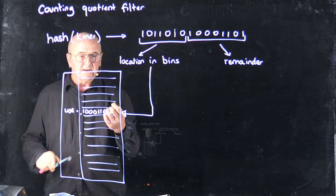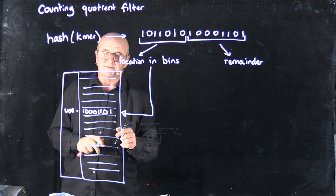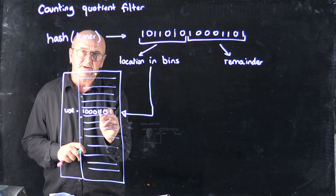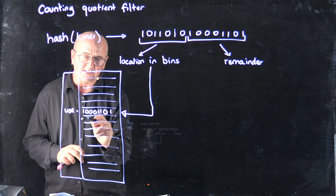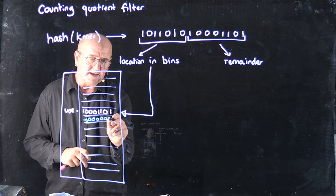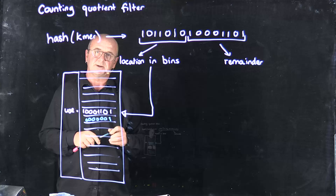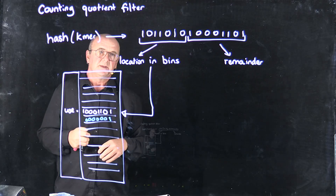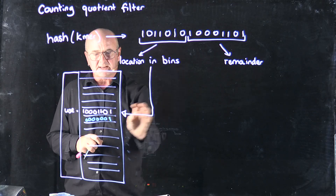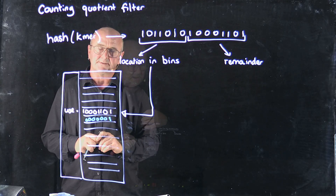The only modification that the counting quotient filter adds is that in the next location after where you're looking, we store basically the count of how many times we've seen that sequence. So if I get another sequence, I get my upper bits, go to that location, go to the next location, and increment the count.